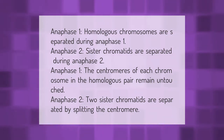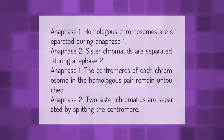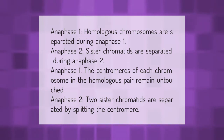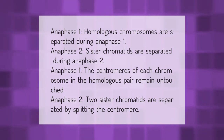Anaphase one: homologous chromosomes are separated during anaphase one. Anaphase two: sister chromatids are separated during anaphase two. In anaphase one, the centromeres of each chromosome in the homologous pair remain untouched. In anaphase two, the two sister chromatids are separated by splitting the centromere.